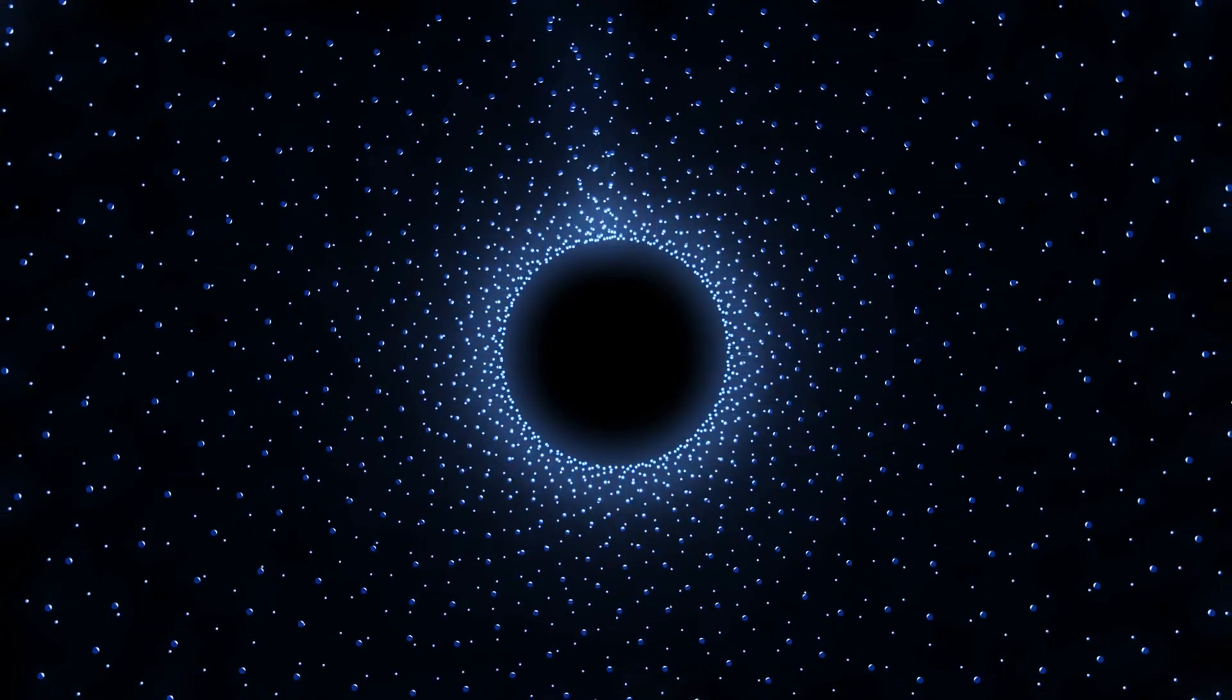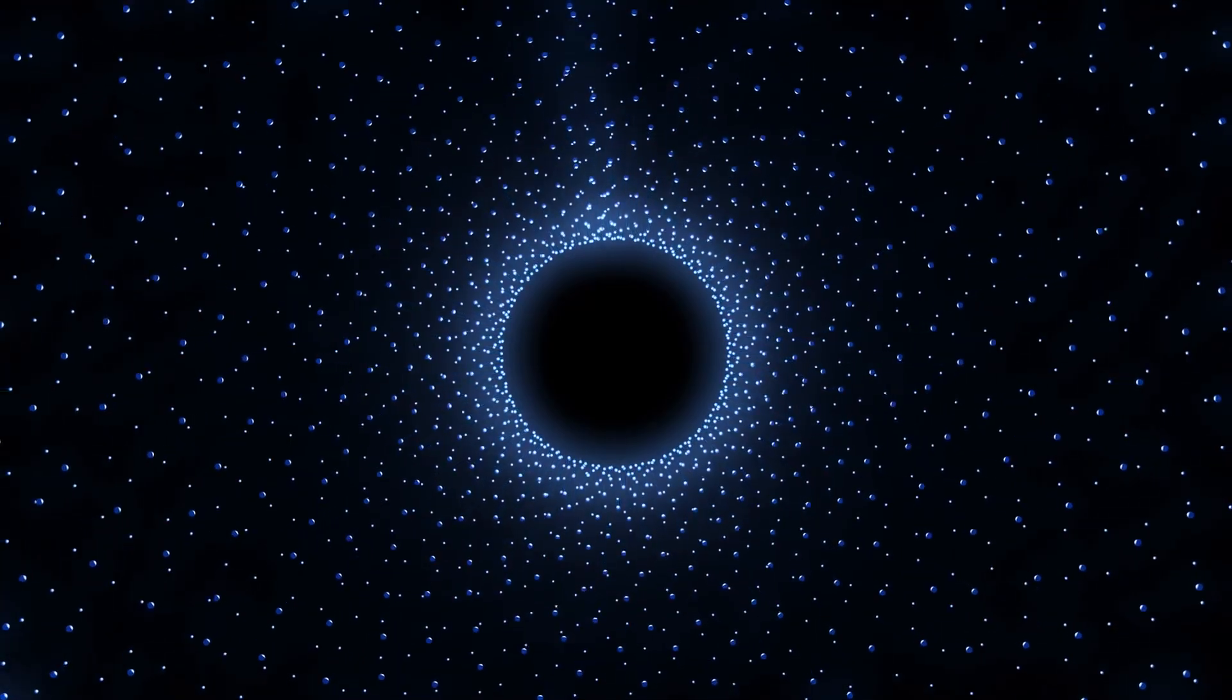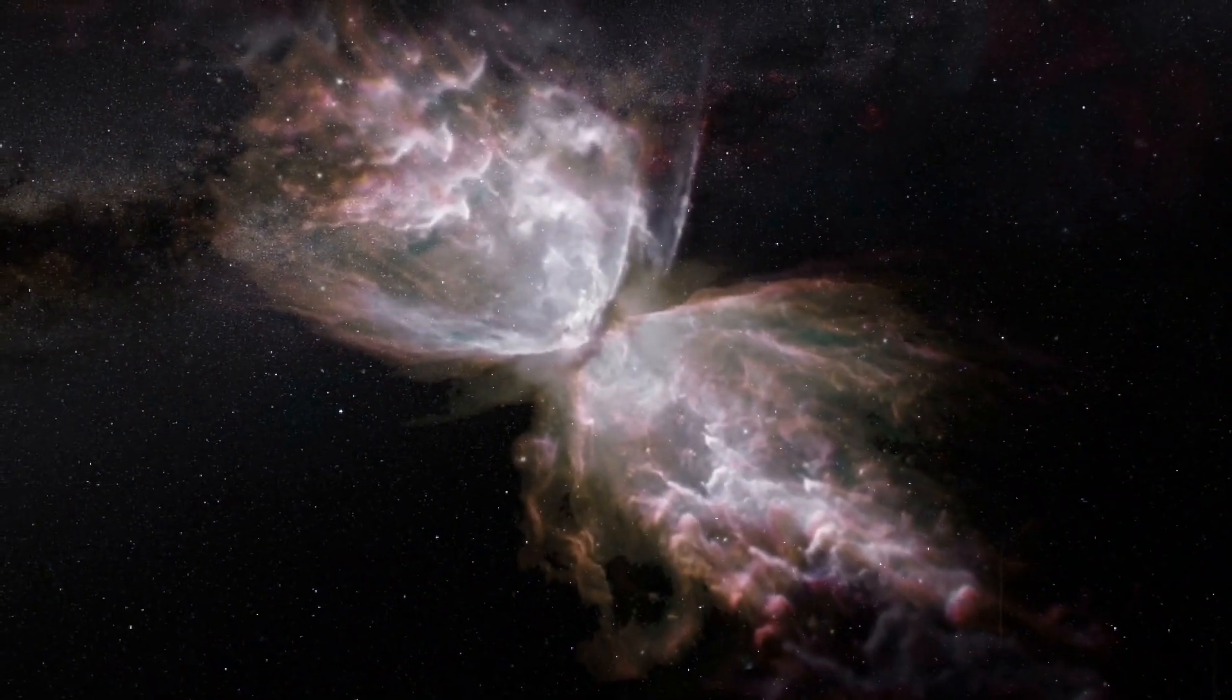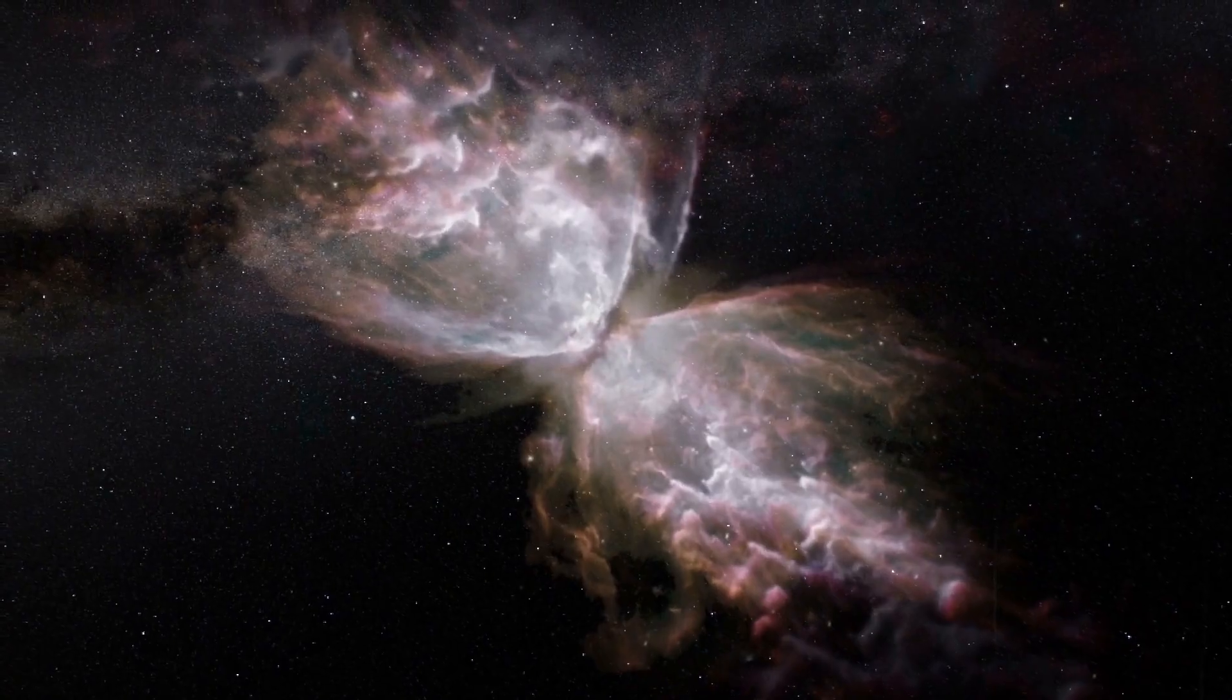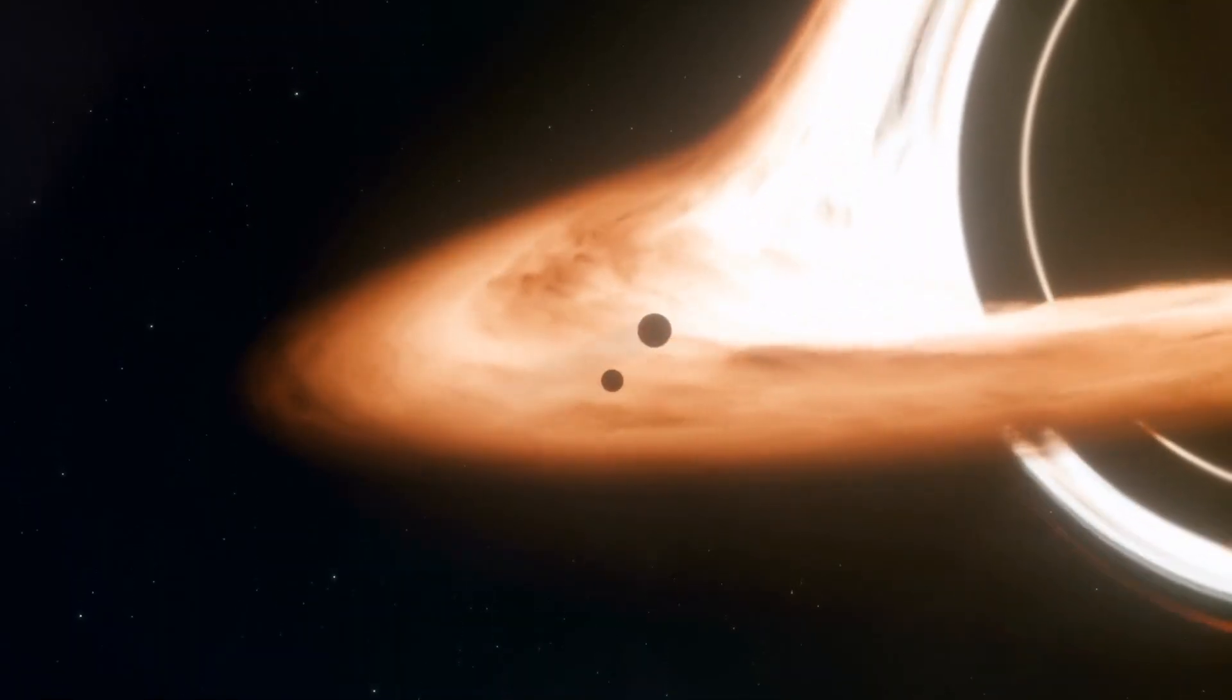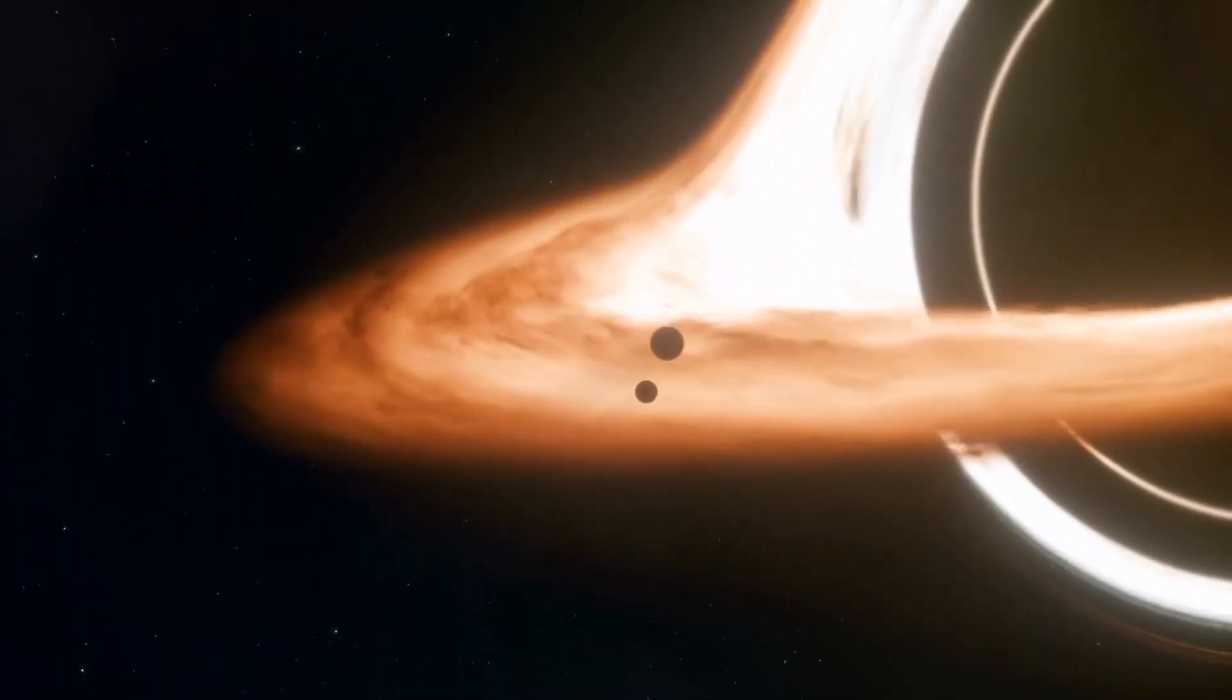Material that gets too close to a black hole gets sucked in and can never escape. The black hole would have the same gravity as the sun. Earth and the other planets would orbit the black hole as they orbit the sun now.